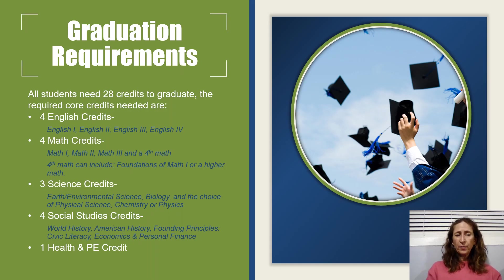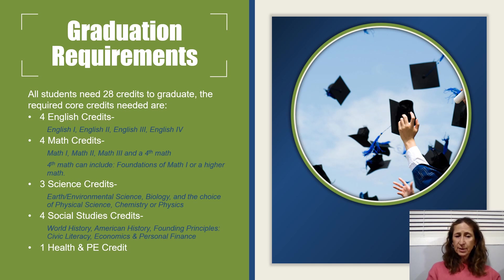Here's a quick reminder of graduation requirements. You will need 28 credits to graduate from high school: four English credits, four math credits, three science credits, four social studies credits, one health and PE credit — and it has to be health and PE, that's the graduation requirement — and then you'll need 12 electives.